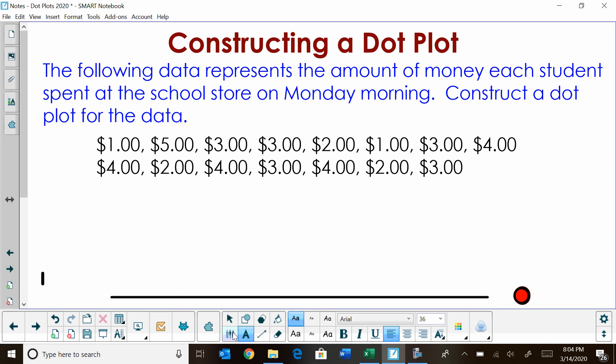Let's count up how many students must have come to the store. We have one, two, three, four, five, six, seven, eight, nine, ten, eleven, twelve, thirteen, fourteen. We have 15 different values. So we had 15 students come to the store on Monday morning. Now they spent between what amount of money? The smallest amount of money is a dollar. And if you look through the list, the largest amount of money was $5.